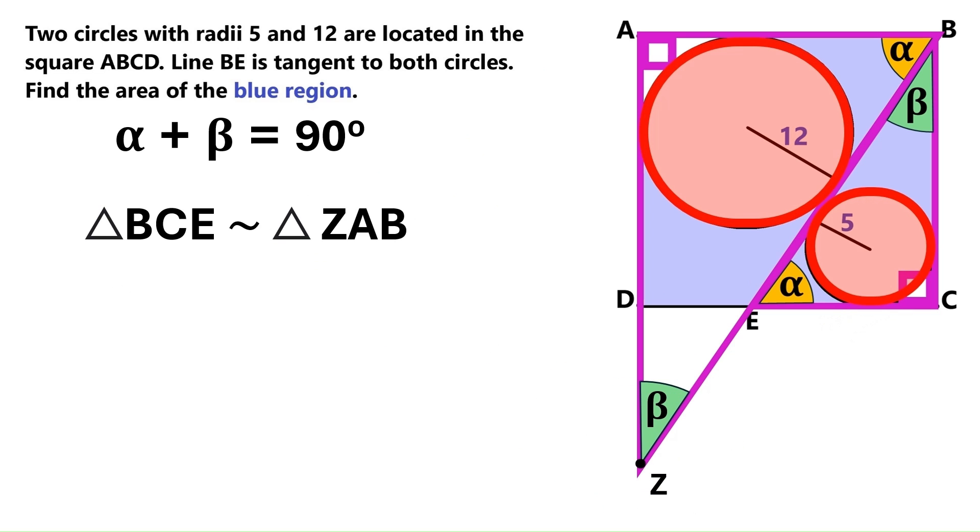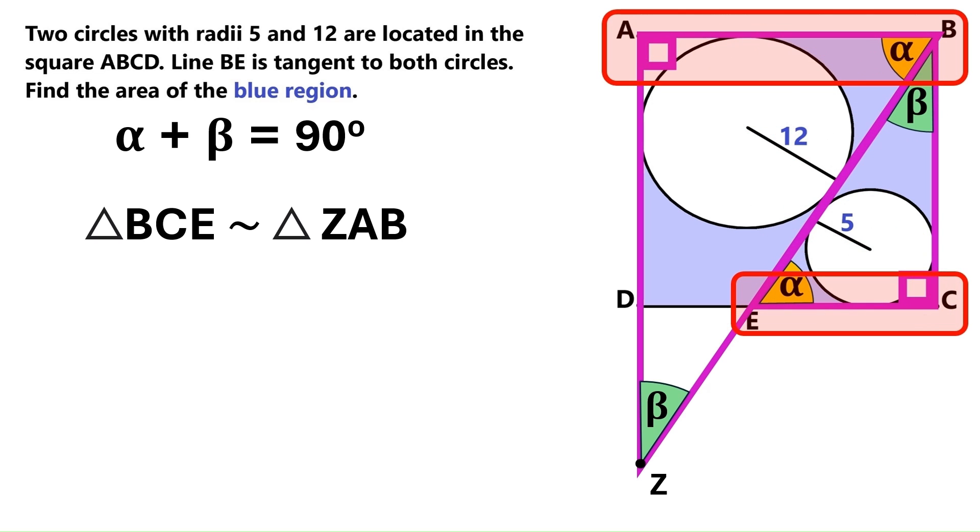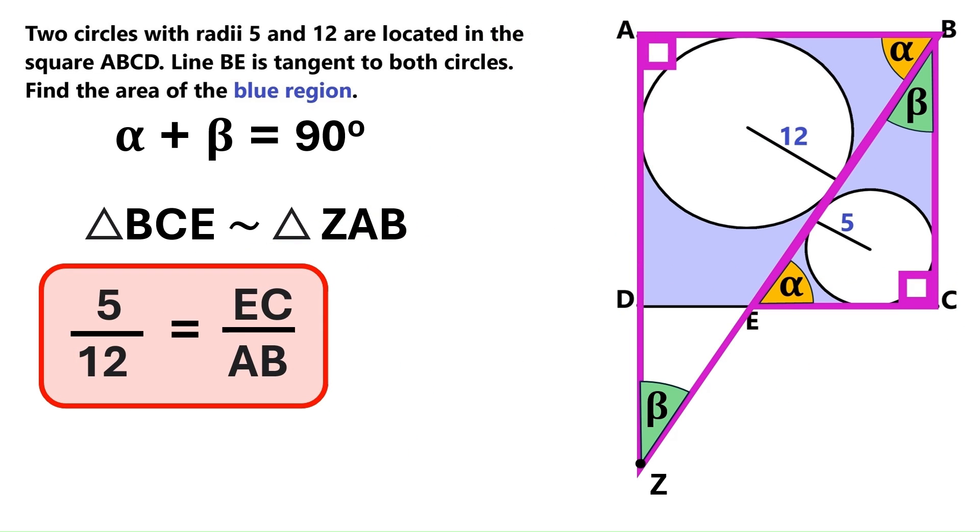Now these two circles are inscribed circles of two similar triangles, which means their proportion is the same as the proportion between the triangles they are inscribed in. So the ratio between their radii must be equal to the ratio between these two corresponding sides. Thus we can conclude that the ratio of EC to AB is 5 over 12.